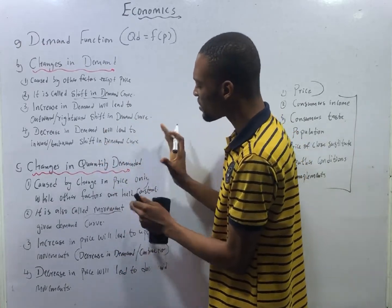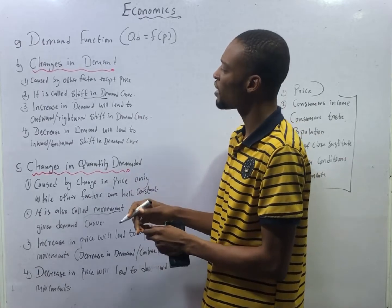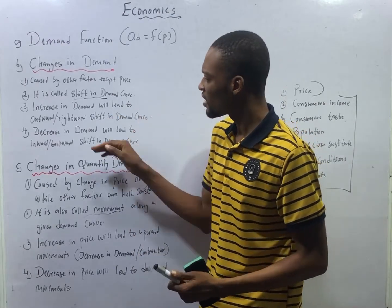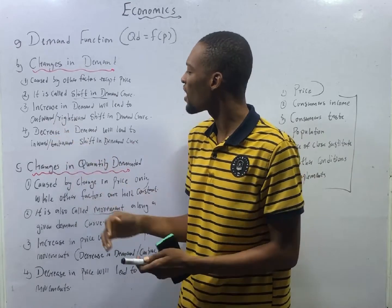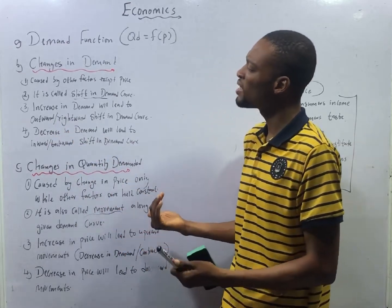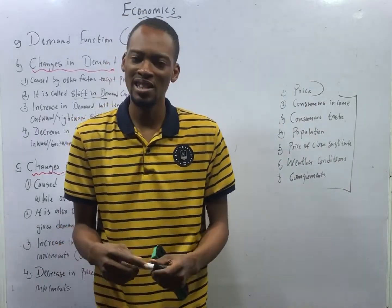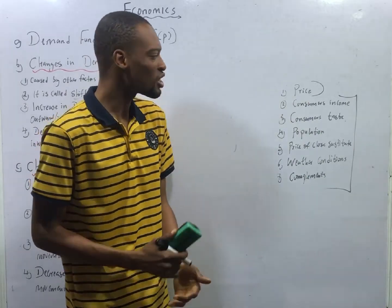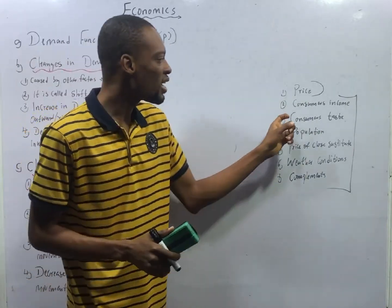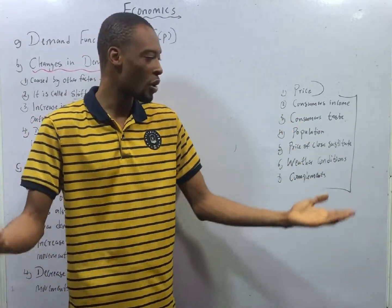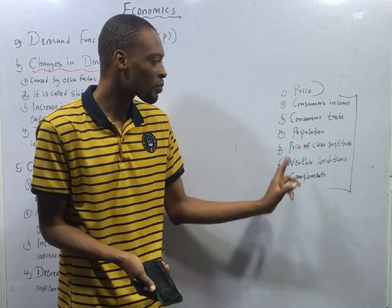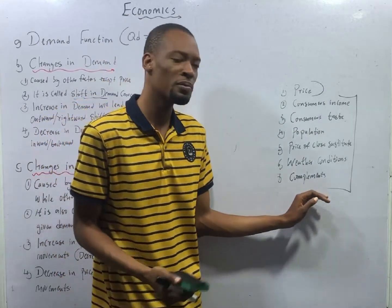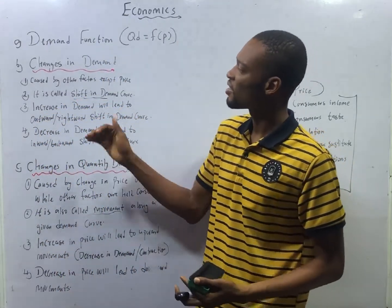Changes in quantity demanded is caused by changes in price only. Changes in demand is caused by other factors except price. For changes in demand, an increase in demand will lead to an outward or rightward shift. Since price is not a factor, demand will increase when consumer's income increases, consumer's taste improves, there is a boost in population, price of close substitutes rises, there are favorable weather conditions, and a favorable price of complementary goods.